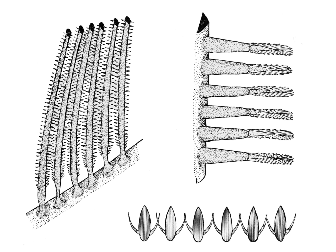Gill rakers, when long and closely set, play the same role in suspension feeding fish such as mullet, herring, megamouth, basking and whale sharks, as baleen in the filter feeding whales.